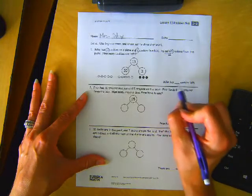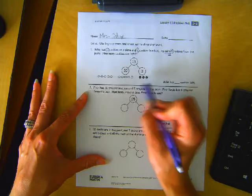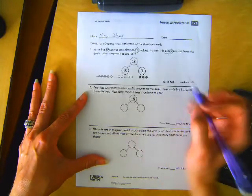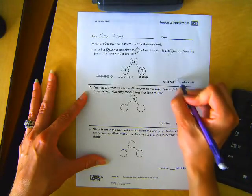So Mike has blank cookies left. Well, he has these three plus the one still on the plate. So that makes four cookies left.